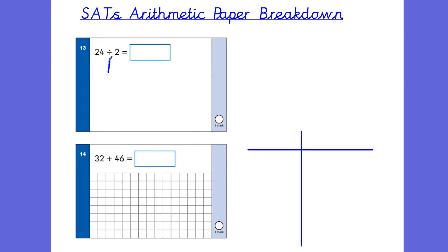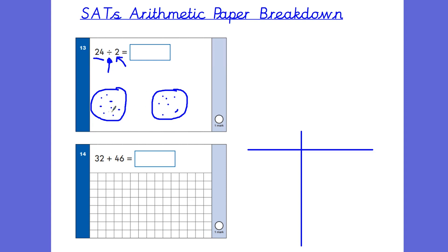We've got another division question: 24 divided by 2. The symbol means sharing and this number tells us how many groups we're sharing into — 2 friends. It's a bigger number so it will take a little while to draw out. Your child could know their 2 times table and know that 12 would be the answer. But many children in Year 2 would still need to draw this out, and that's perfectly normal. When shared equally, each person gets 12.